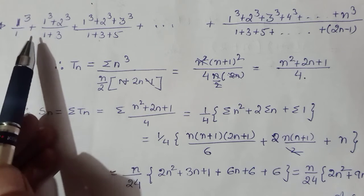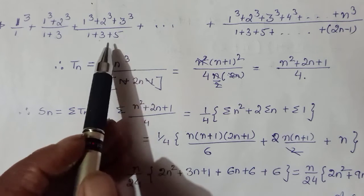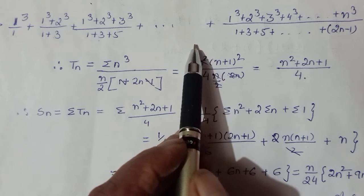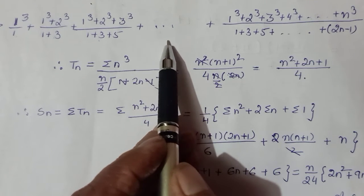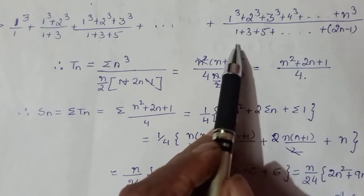First term mein one ka cube tha, second term mein ek aur two ka cube aa gaya, phir add hote three ka cube. Naturally fourth term mein aa jaega 1³ + 2³ + 3³ + 4³ will also creep in. Then 1 + 3 + 5 + 7, odd numbers. So we can observe that for the nth term, this is what your nth term will appear to be.